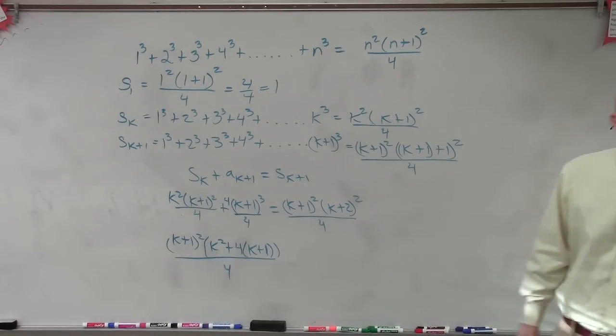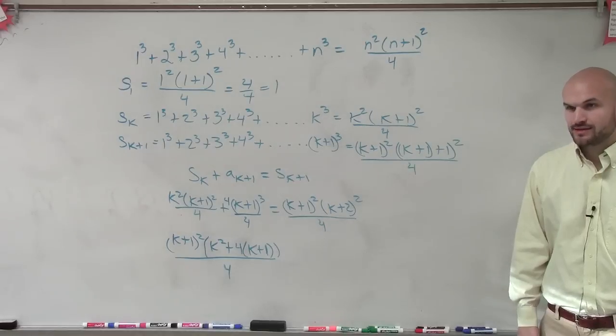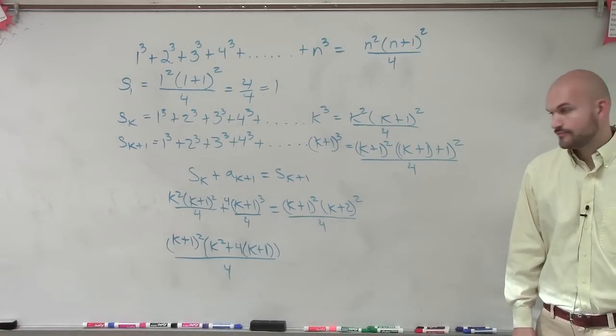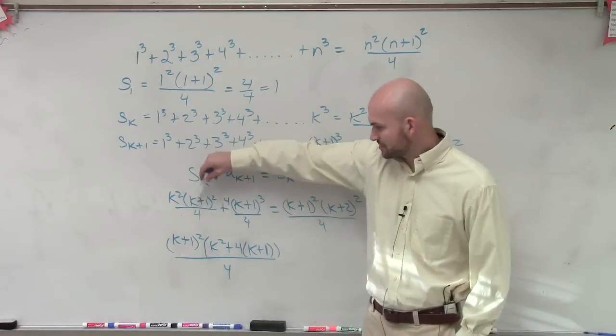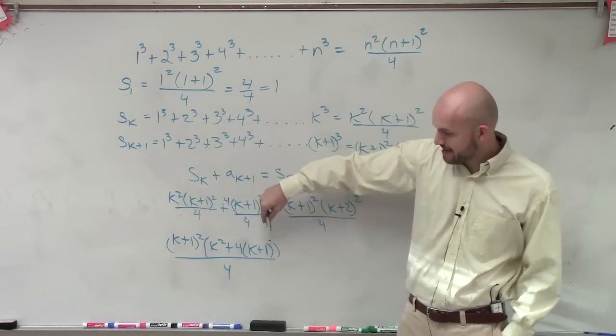Would everybody agree with that right there? Yes. Yes, Lauren? OK. Does everybody agree with what I did? Does everybody see what I did? I just factored out a (k+1), but this is (k+1)³, so there's still going to be a (k+1) there, right?